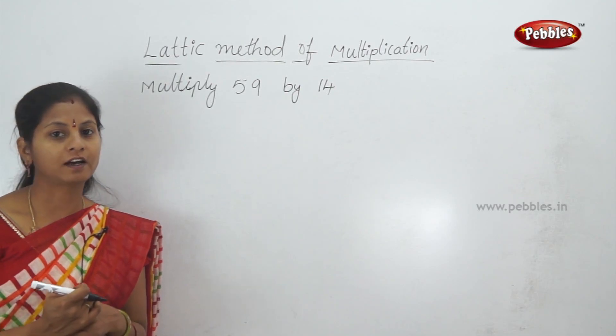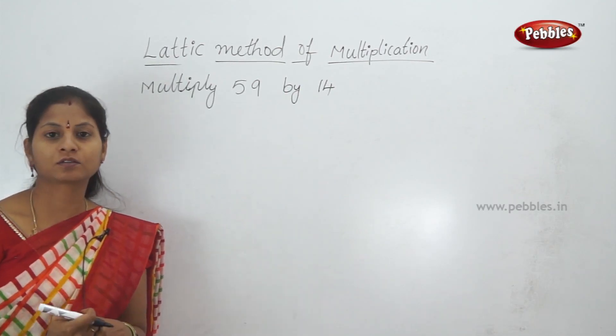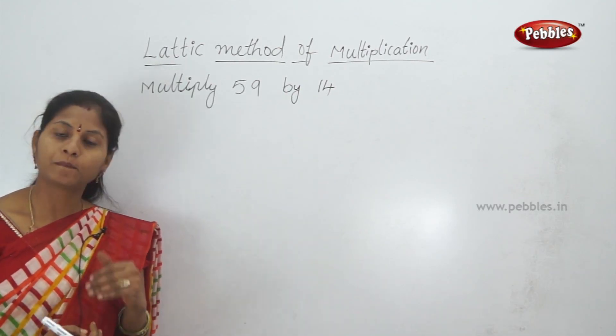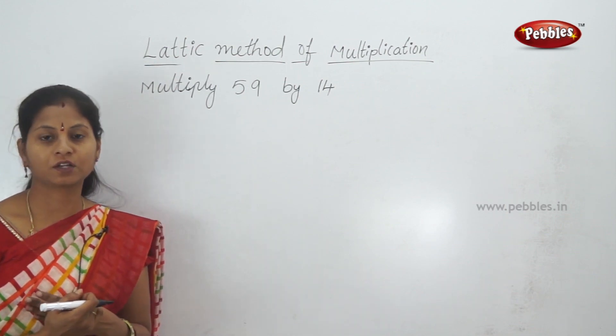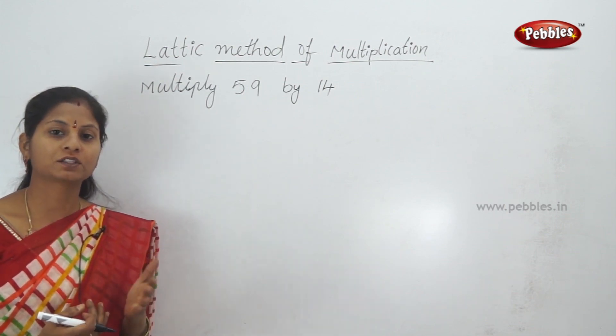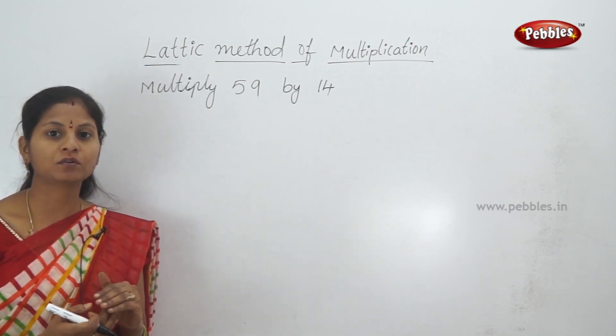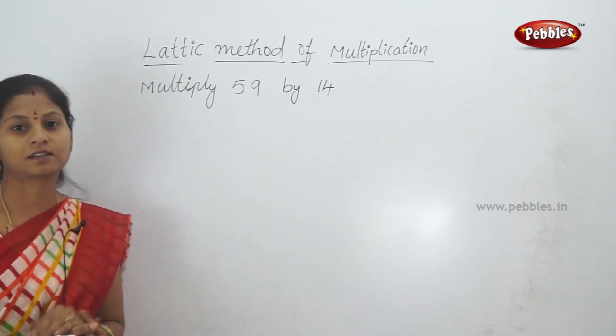Now we need to do normal multiplication in the box method. We need to do multiplication in the box method, and we need to do multiplication. The first method is the lattice method.